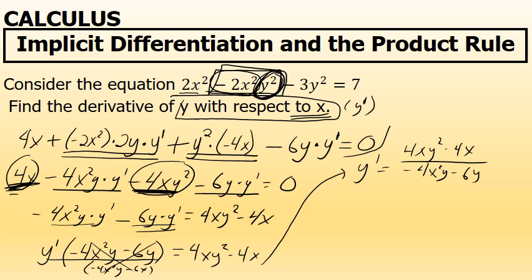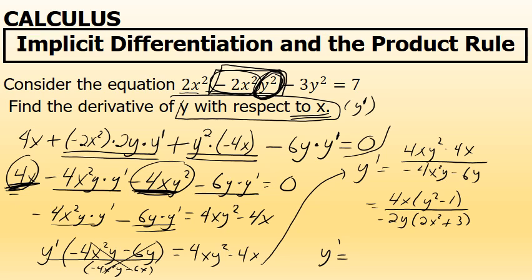There's some simplification that can be done. The numerator has a common factor of 4x, which I'll factor out to rewrite it as 4x times the quantity y squared minus 1. The denominator has a common factor of negative 2y, leaving 2x squared plus 3. The final answer, after dividing 4 by negative 2, is 2x times y squared minus 1 — which optionally could be factored as y plus 1 times y minus 1 — over y times the quantity 2x squared plus 3.